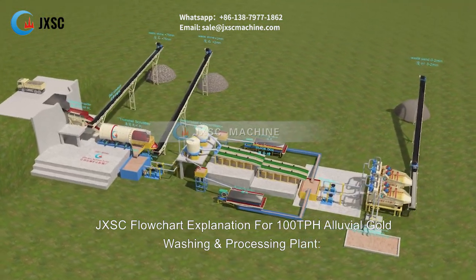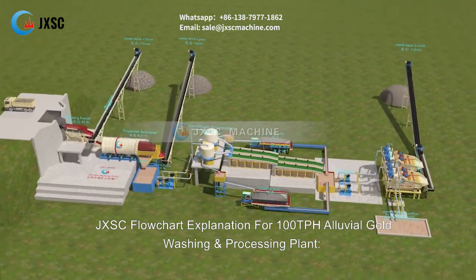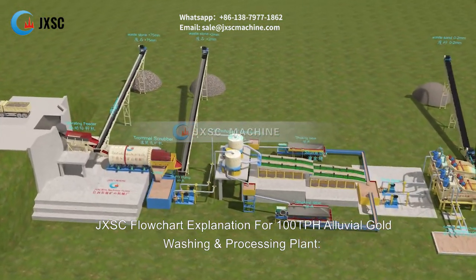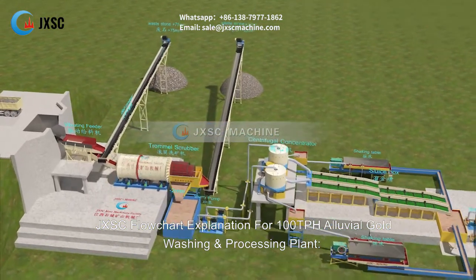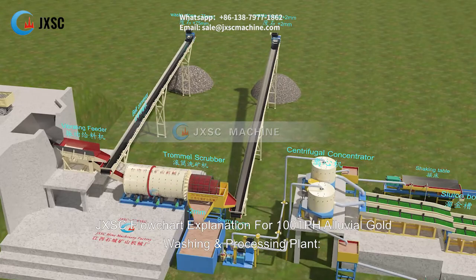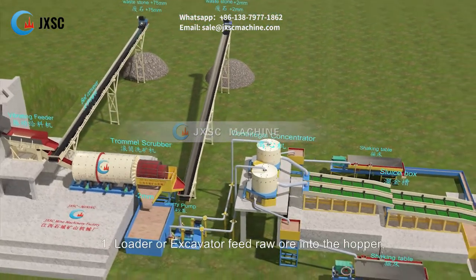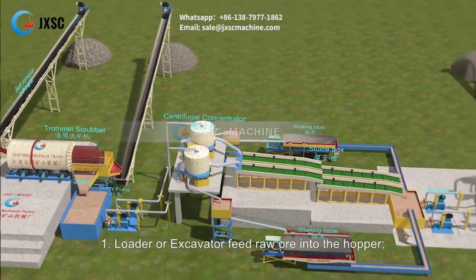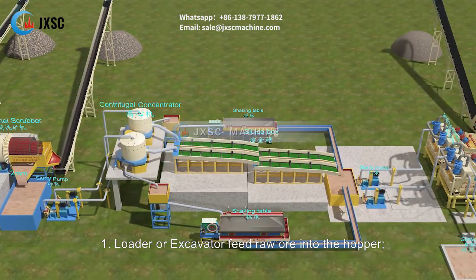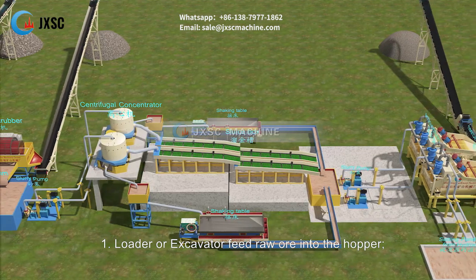JXSC Flowchart Explanation for 100 TPH Alluvial Gold Washing and Processing Plant. Step 1: Loader or excavator feeds raw ore into the hopper.